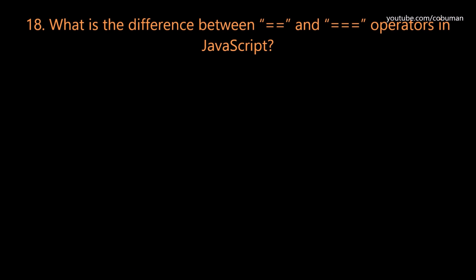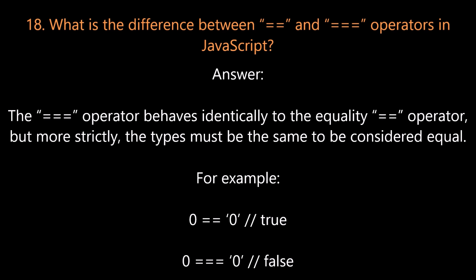Question number eighteen: What is the difference between the double equals (==) and triple equals (===) operators in JavaScript? The triple equals operator behaves identically to the double equals operator, but more strictly — the types must be the same to be considered equal.